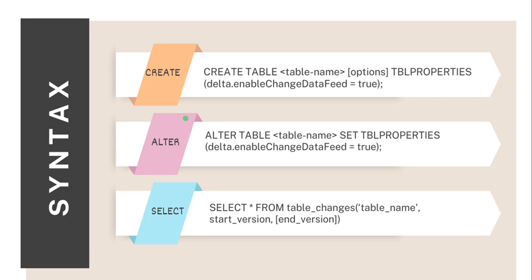Coming to syntax: if we have to enable this feature on a delta table at creation time, we use the CREATE TABLE statement with the table name and specify the table property 'delta.enableChangeDataFeed = true'. By default it is false. In case we have already created a delta table but haven't enabled the feature and want to enable it later, we can use the ALTER TABLE statement — specifying the table name, then SET TBLPROPERTIES with the property set to true.